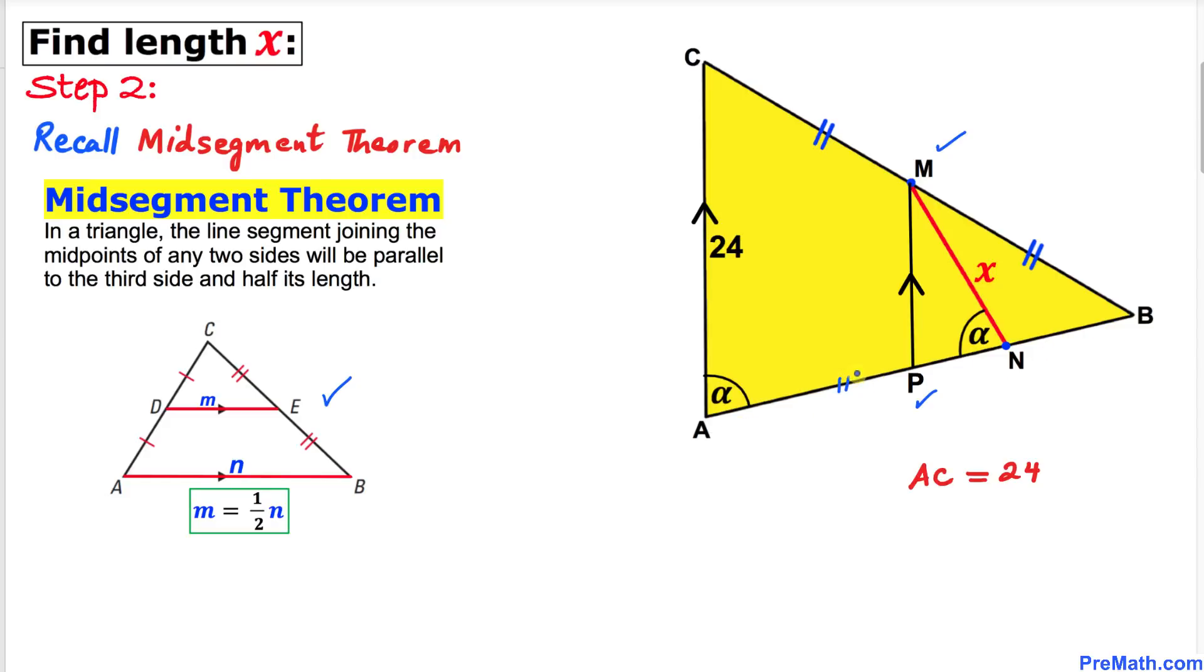That means line segment AP equals line segment PB, and line PM is parallel to line AC. Therefore, according to this theorem, side length PM is going to be half of side AC.